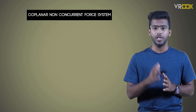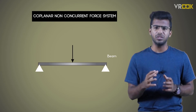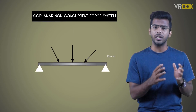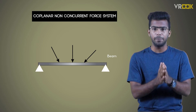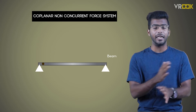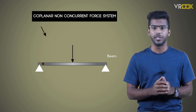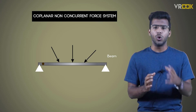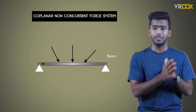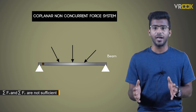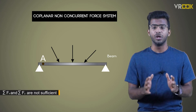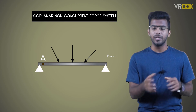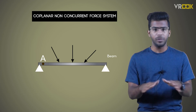Now let us move on to the second type of force system. The forces in a coplanar non-concurrent system will be in a single plane but can act at any point on an object. As they are not acting at a single point, only two conditions — sigma Fx and sigma Fy — are not sufficient to determine whether the object is in equilibrium or not.